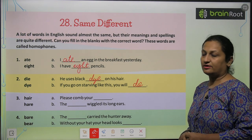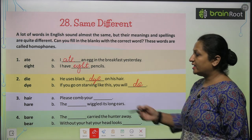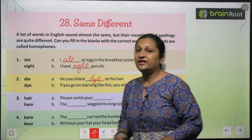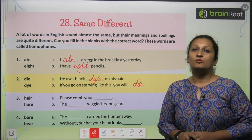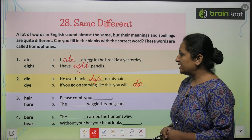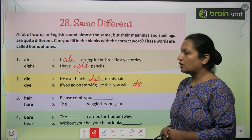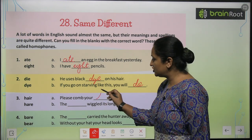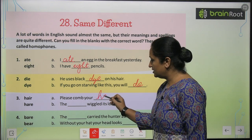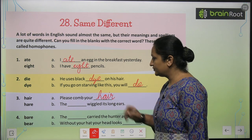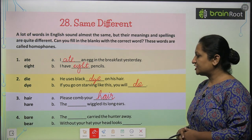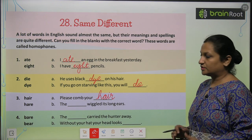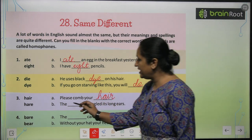Hair and hare. 'Hair' means baal, and 'hare' is a form of rabbit. Please comb your dash — toh aap yahaan pe H-A-I-R likhenge. The dash wriggled its long ears — toh yahaan hum likhenge 'hare'.